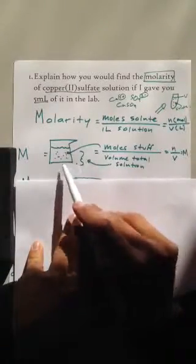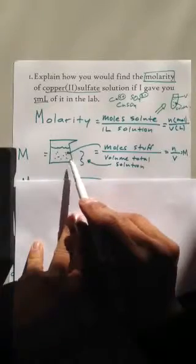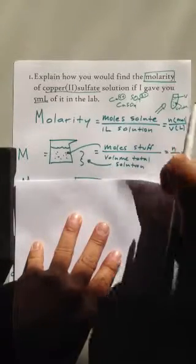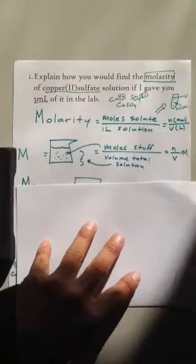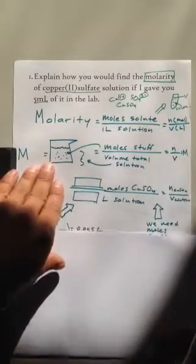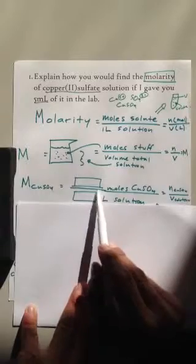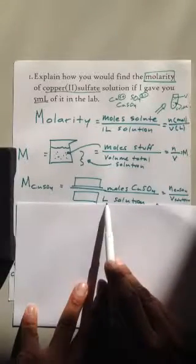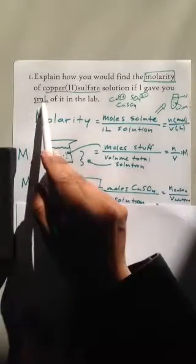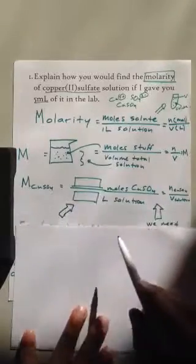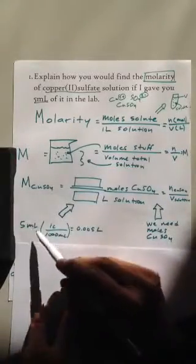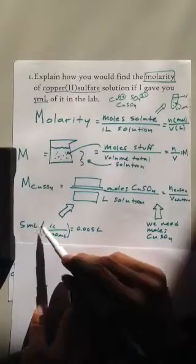It's the moles of stuff over the total volume of the solution. That's all we've got to find out. So if I give you 5 milliliters, let's think about this. The molarity of copper sulfate will be the moles of copper sulfate over the liters of solution. So, 5 milliliters...